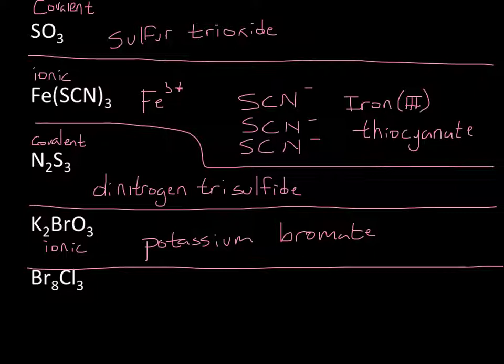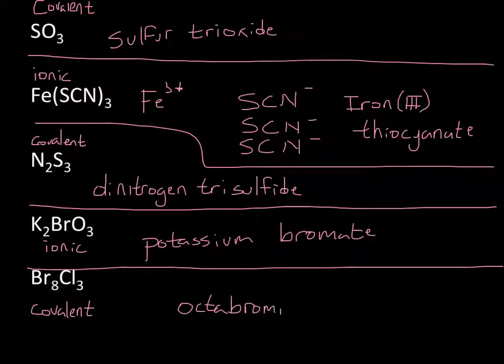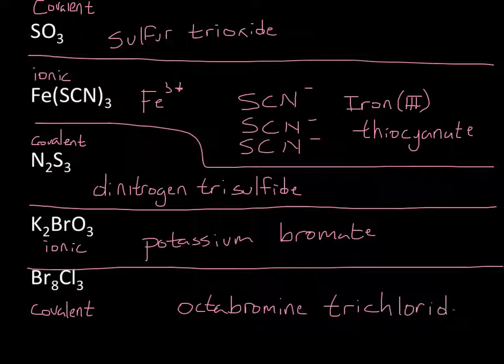And then finally, Br8Cl3. So right here, we have non-metal, non-metal. So that means we've got another covalent compound. Prefix for 8 is octa. And then that's bromine, so it would be octabromine. And then the prefix for 3 is tri. And so it's going to be trichloride. So there you go. That's converting from formulas into names.